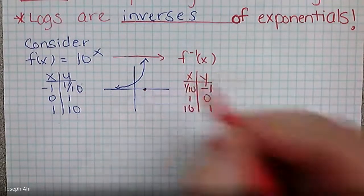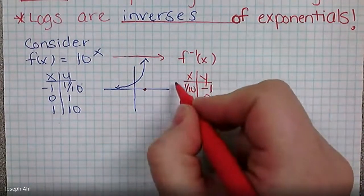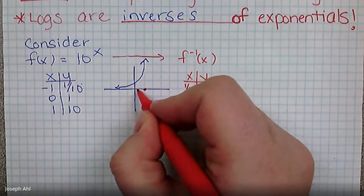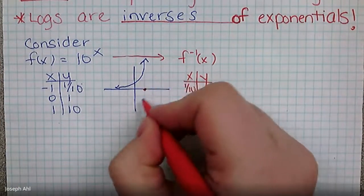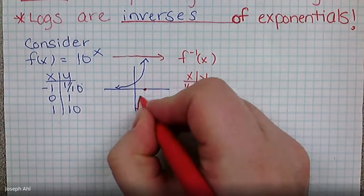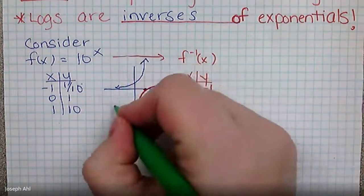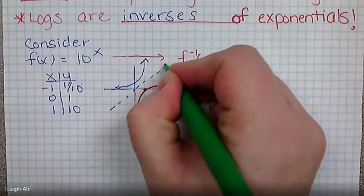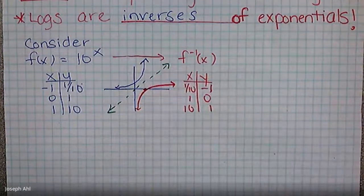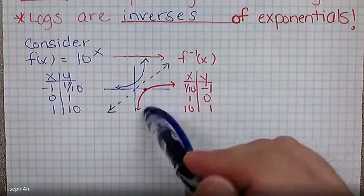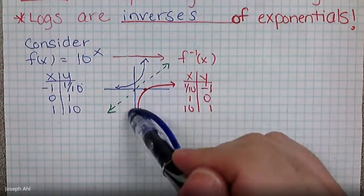One comma zero is pretty easy to plot. Ten comma one would be way out there. And one tenth comma negative one — you go over a tenth and down negative one. The main idea is the graph looks something like this. And as a reminder, graphically, when you look at a function and its inverse, it's a reflection over the line Y equals X. So if I take this graph and flip it over that line, we get this graph in red.